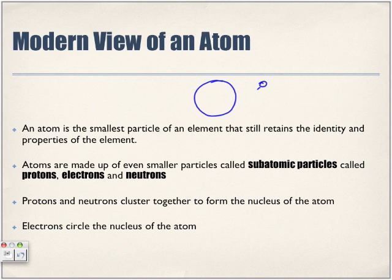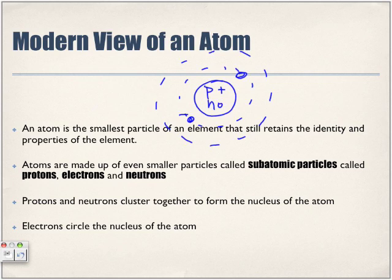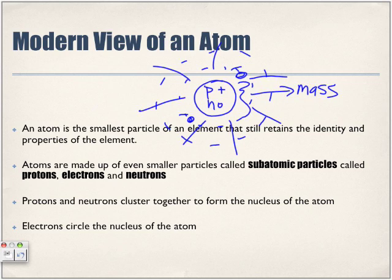Within the nucleus there are protons and neutrons. Surrounding the nucleus are electrons — negatively charged subatomic particles circling it. The entire mass of the atom lies within the nucleus, within that cluster of protons and neutrons. The electrons surrounding the nucleus are what interact with other atoms.